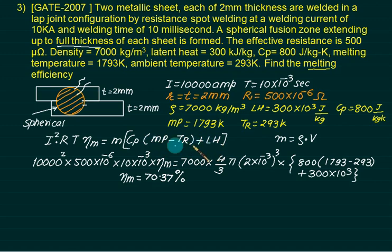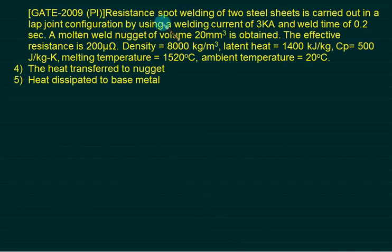Now sometimes they will not give you full data. So this has to be solved according to data given to you. Don't add any data from your pocket. Resistance spot welding of 2 steel sheets is carried out in a lap joint configuration by using a welding current of 3 kilo amperes. So write I equals 3000 amperes. A weld time of 0.2 second. This time the volume of nugget is directly given, 20 mm cube.